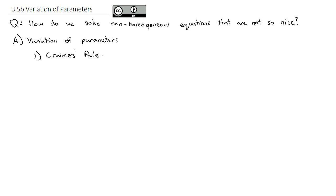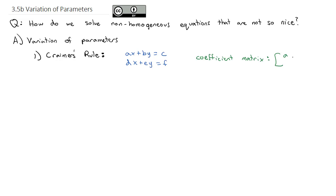Cramer's Rule is a nice, slick trick to solve a system of equations using determinants, and it works for any number of variables. We're just going to look at it with two variables. So if we have ax plus by equals c, and another equation dx plus ey equals f, we can make the coefficient matrix, which is just the coefficients of the variables: a, b, d, and e.